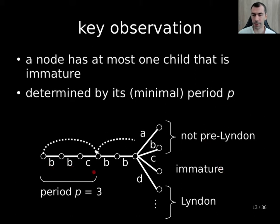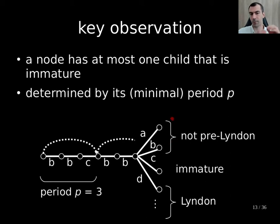For instance, we have here 'b,b,c,b,b' and we want to append a new character, so we move down. If we take 'c', which corresponds to the period 'b,b,c,b,c', then it's immature. If the appended character is smaller than 'c' — like 'b' or 'a' — then we get a word that is not pre-Lyndon. So regardless of what we append later on, we never get a Lyndon subsequence, because this 'a' is always smaller than what's here and we can never extend it to a Lyndon word. On the other hand, if we append 'd', then it instantaneously becomes Lyndon.